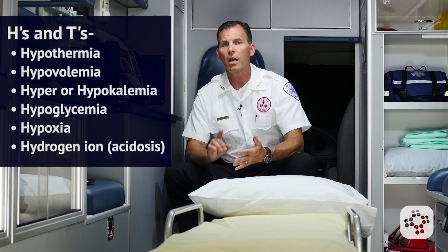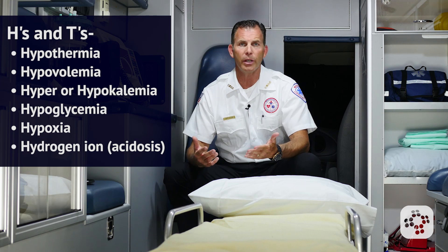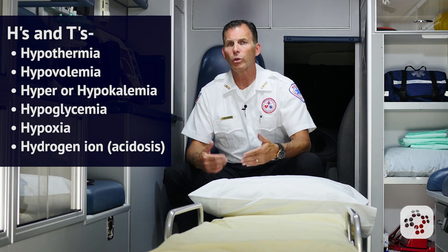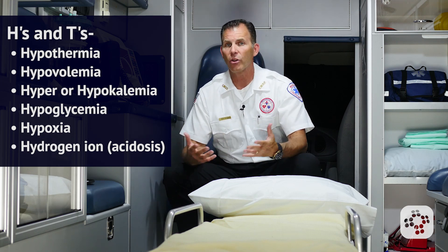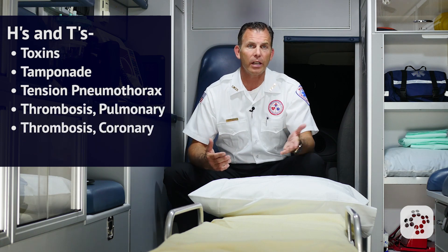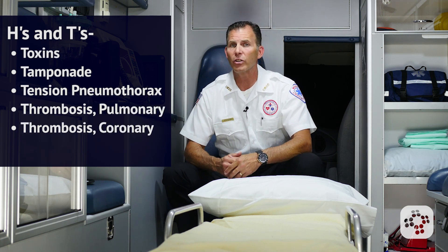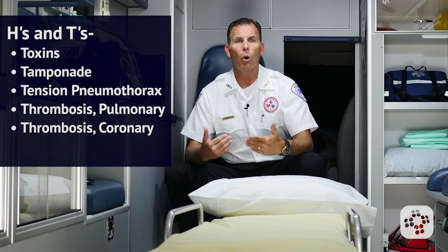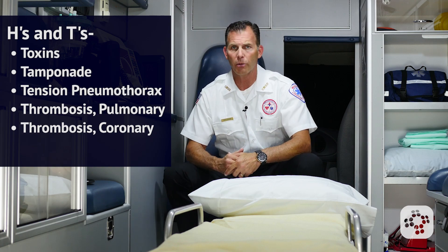The most common reversible causes of asystole can be remembered as the H's and T's, which stand for hypothermia, hyper- or hypokalemia, hypoxia, hydrogen ions (which equals acidosis), toxins, cardiac tamponade, tension pneumothorax, and pulmonary thrombosis or coronary thrombosis.